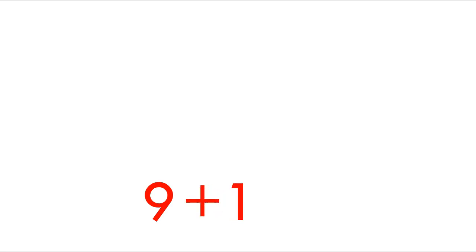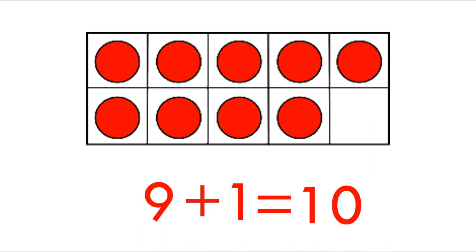Now we need to make a number sentence. If we have 9 red dots, how many more dots do we need to make 10 and fill out that whole chart? Let's think: 9, 10 — we only needed 1 more. So our number sentence would be 9 plus 1 equals 10. And now we can check our answer: here we have 9 dots and we only needed 1 more.